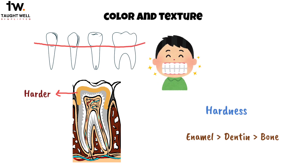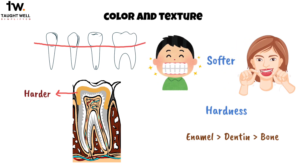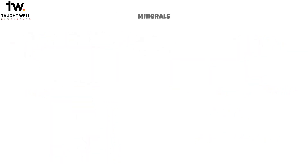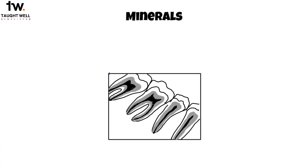Primary teeth have dentin that's a bit softer than the dentin in permanent teeth. The amount of minerals in dentin also affects how it acts. Dentin has fewer minerals than enamel, which makes it more radiolucent, or darker on radiographs.